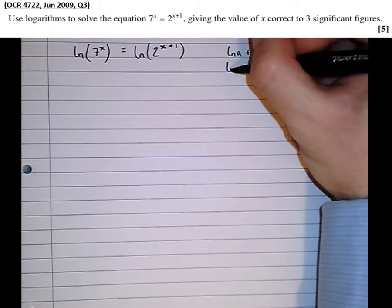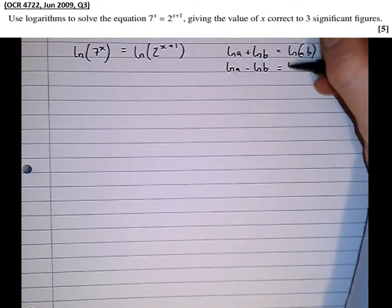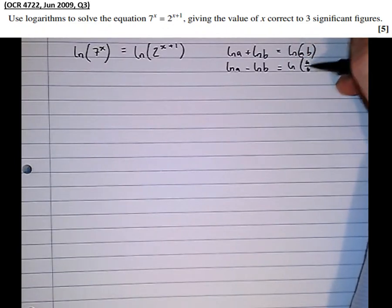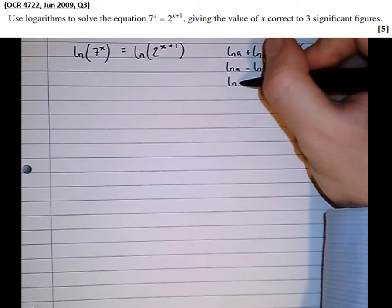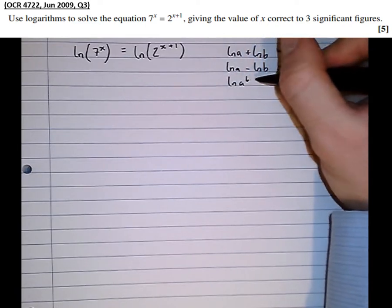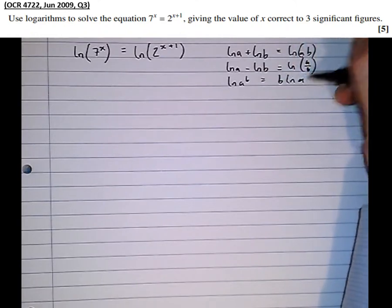We've got log a minus log b equals log of a over b. And the third log rule is the power rule. Log of a to the power of b equals b log a.